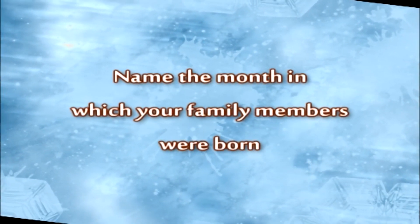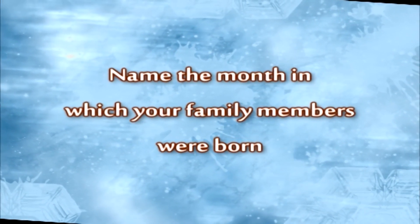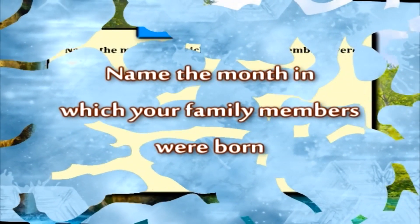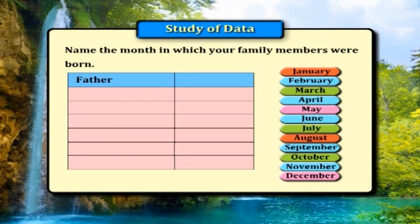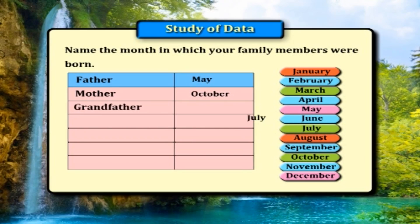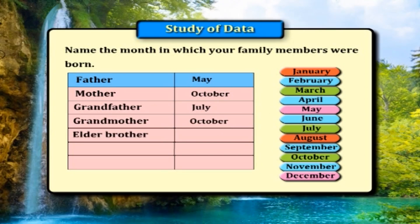Name the month in which your family members were born. October — Elder Sister. April — Myself. August.